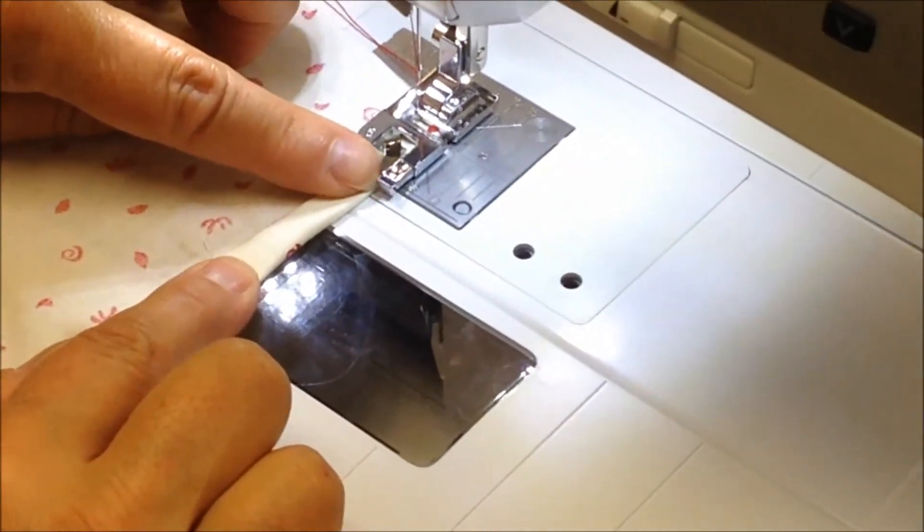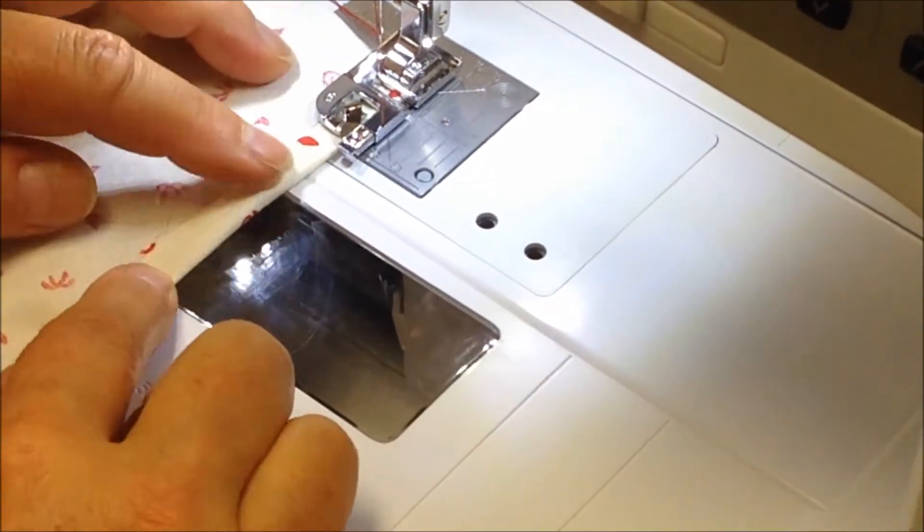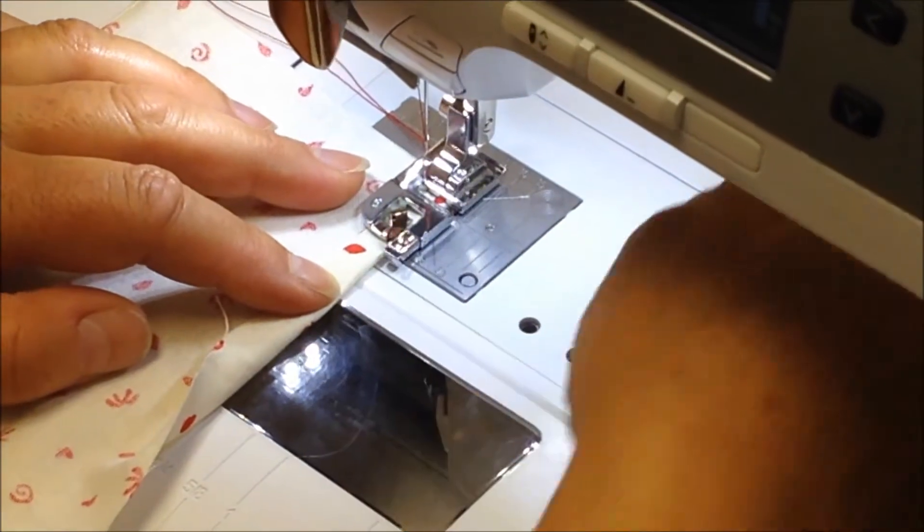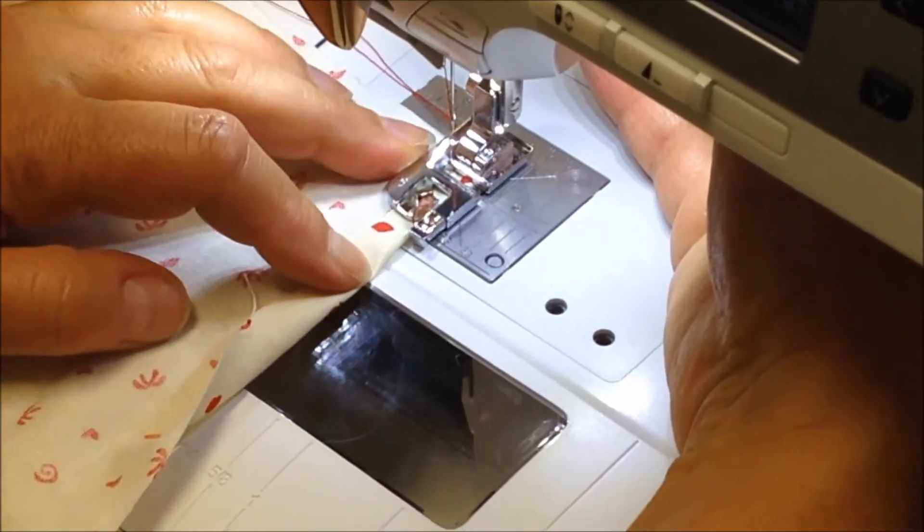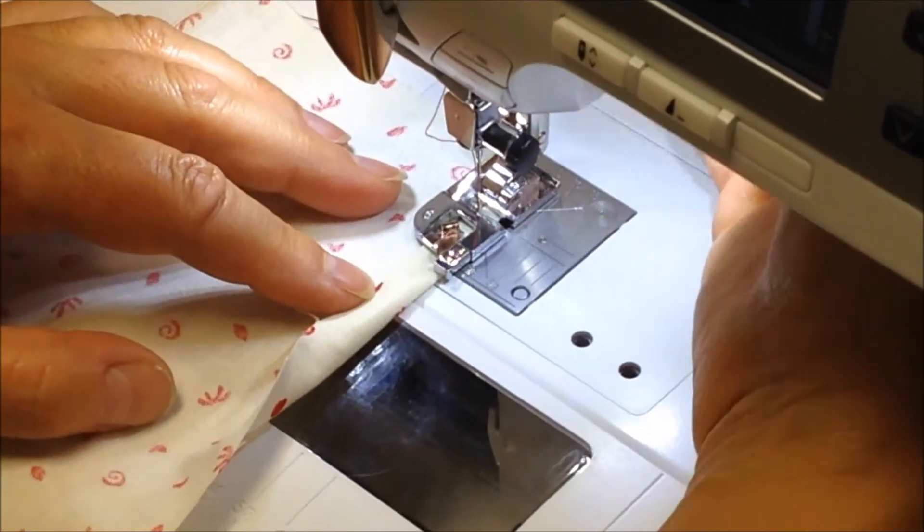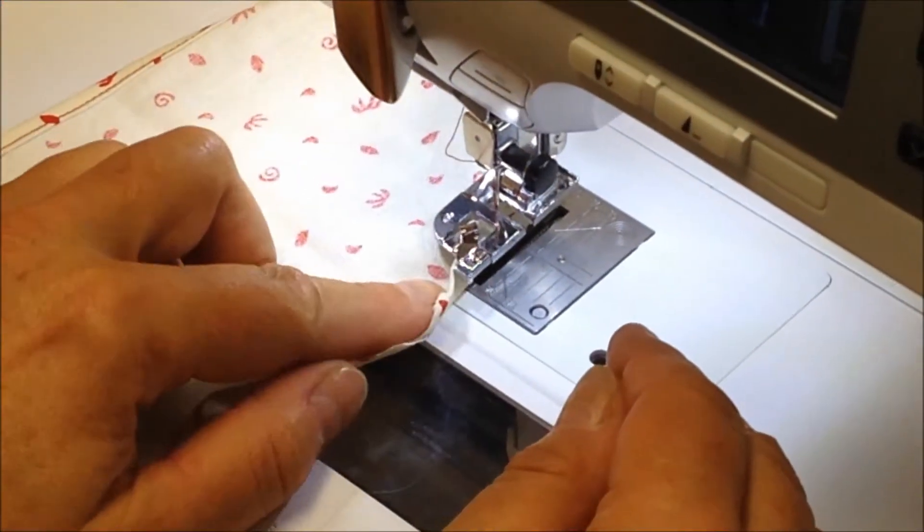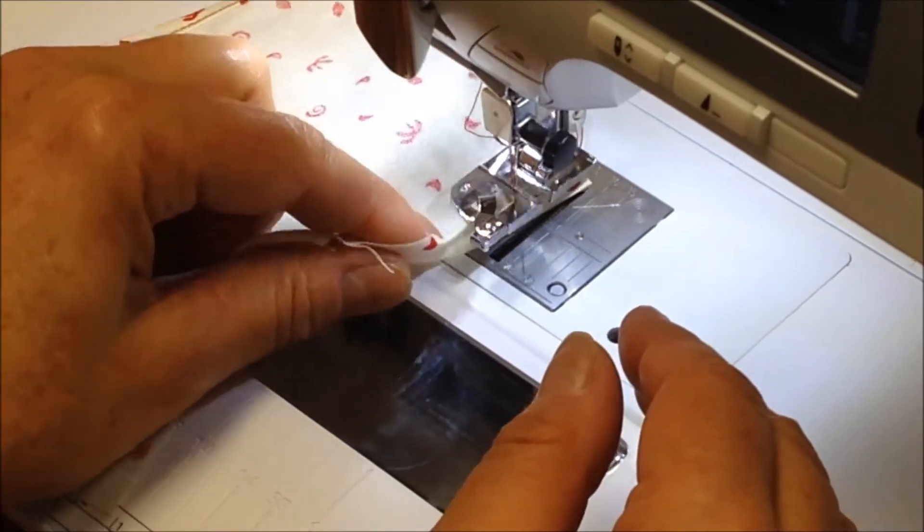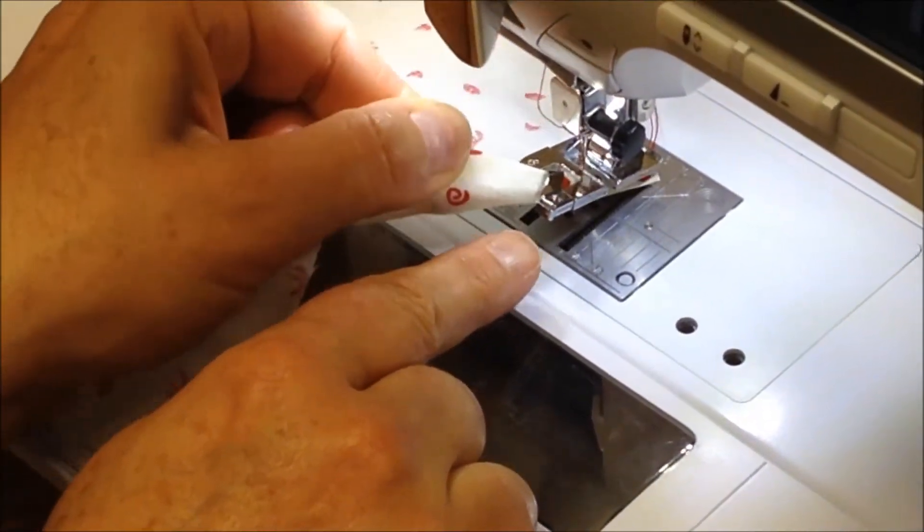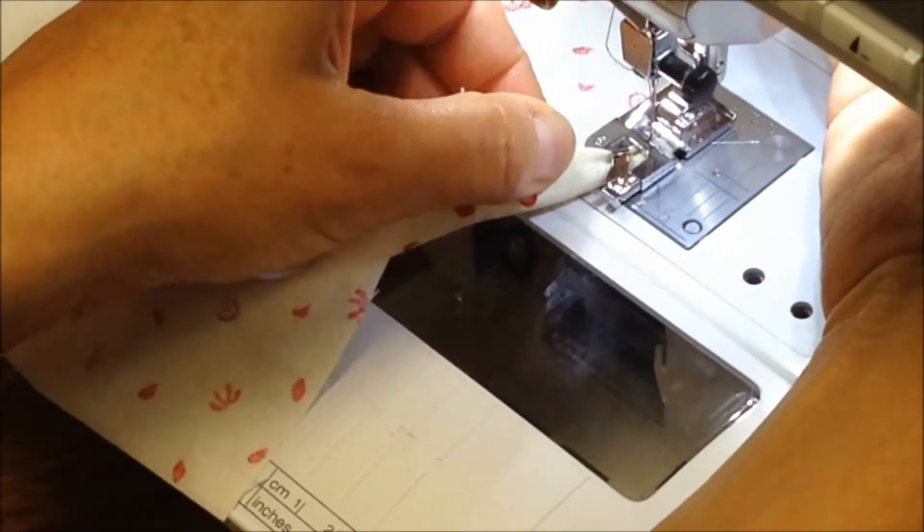Make sure the edge of your fabric is to the left of this little guide bar. I like to have the needle in the down position so I can stop if needs be. Go ahead and stitch for just a half of an inch. Stop. Raise the presser foot. Now you're going to open up the fold of your fabric and put the raw edge up into the curl, and then lower the presser foot.